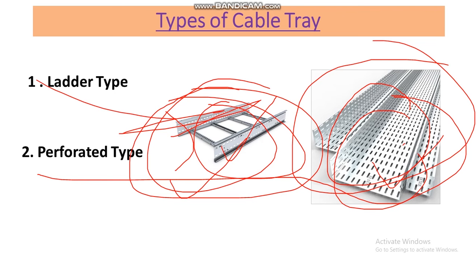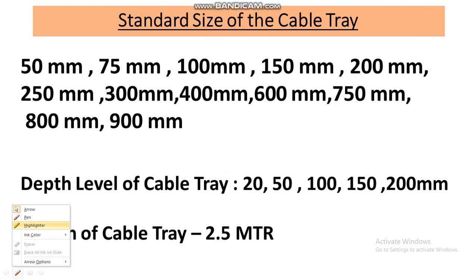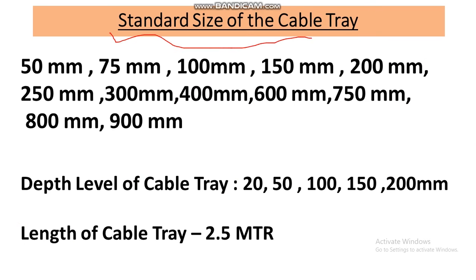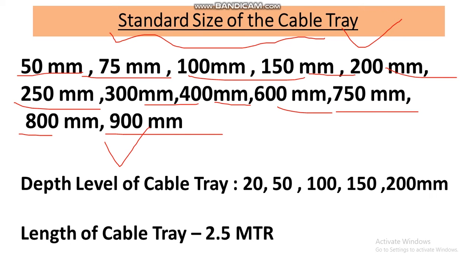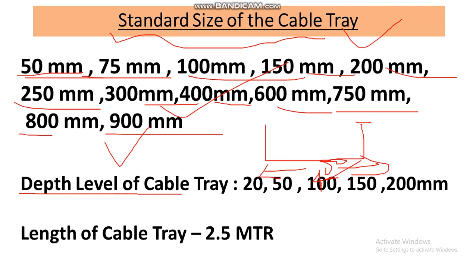Now let's look at cable tray sizes. The standard sizes available in the market for width are: 50mm, 75mm, 100mm, 150mm, 200mm, 250mm, 300mm, 400mm, 600mm, 800mm, and 900mm. The depth sizes available are: 20mm, 50mm, 100mm, 150mm, and 200mm. The standard length of a cable tray is 2.5 meters.